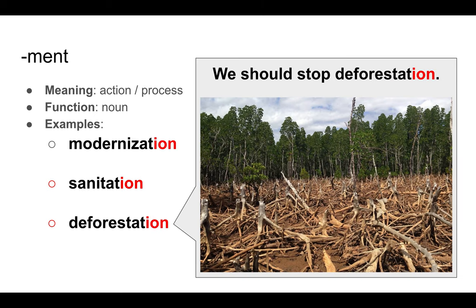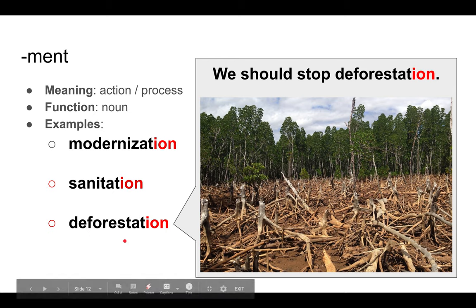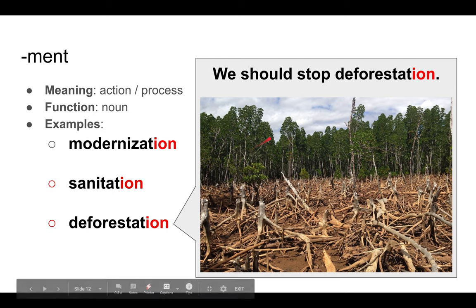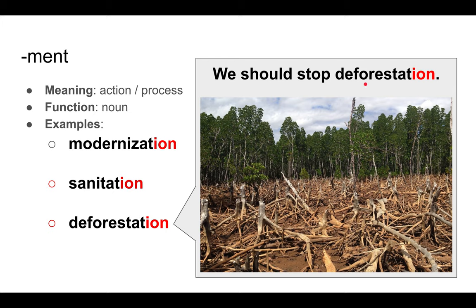Then we have -tion, with action as a process, and it's a noun. So we have, for example, modernization — the process of making something modern. Sanitation — the process of cleaning or sanitizing something. And deforestation — the process of cutting down the forest. Again, it's a noun, so we should stop deforestation.